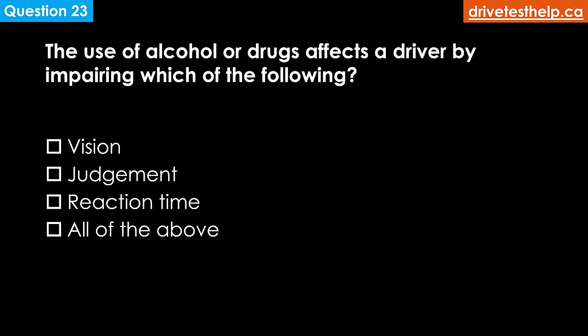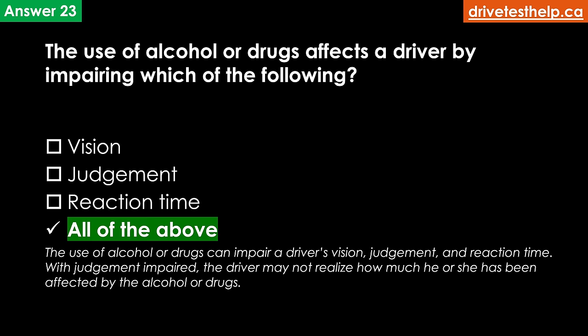The use of alcohol or drugs affects a driver by impairing which of the following? Options: vision; judgment; reaction time; all of the above. The correct answer is all of the above. The use of alcohol or drugs can impair a driver's vision, judgment, and reaction time. With judgment impaired, the driver may not realize how much he or she has been affected.